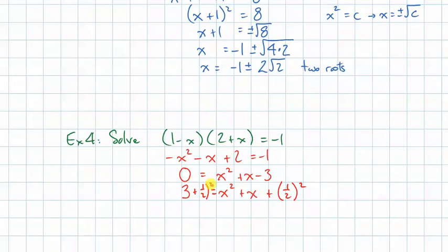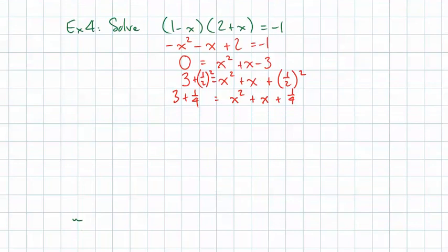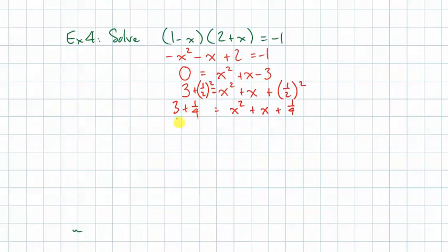This is now a perfect square trinomial. x squared plus x plus 1 quarter. And this is 3 plus 1 quarter. I'm going to need to combine this. This is 12 over 4 plus 1 over 4. So, I can write that as 13 over 4. And this is now the binomial square. x plus half all squared.